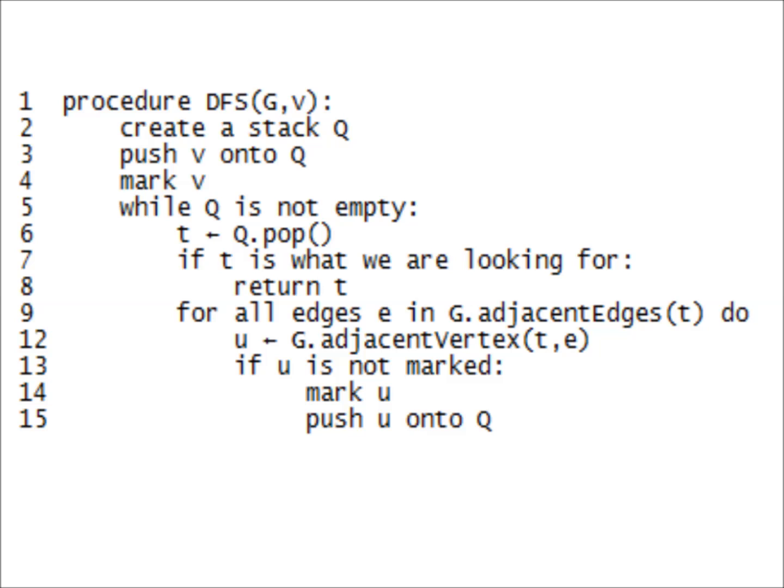If you want your search to run on the entire graph, like ours did, instead of stopping at a goal state, just take the statement about the goal state out, and it will run until the entire graph is explored.